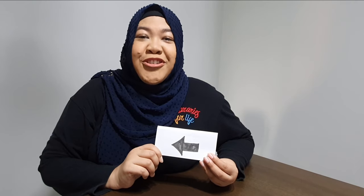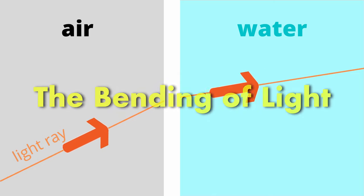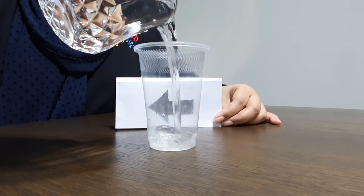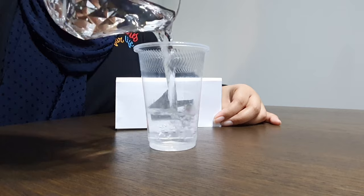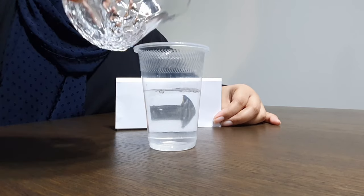The arrow looks like it has changed direction because of something called refraction. Refraction happens when light passes through one transparent thing into another. In this case, the light passes from the air through the glass and water. This is sometimes called the bending of light. So, the light bends when it enters the water and then bends again when it leaves the water, which is why the image ends up looking flipped.